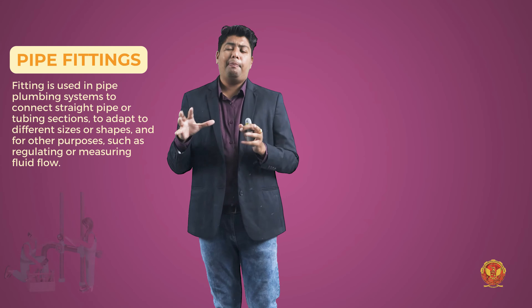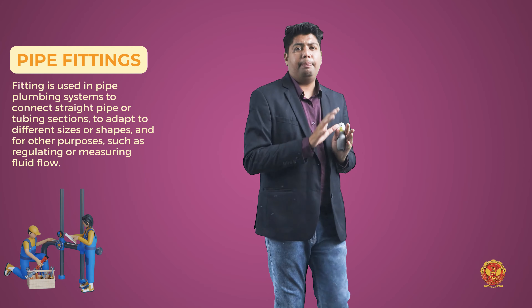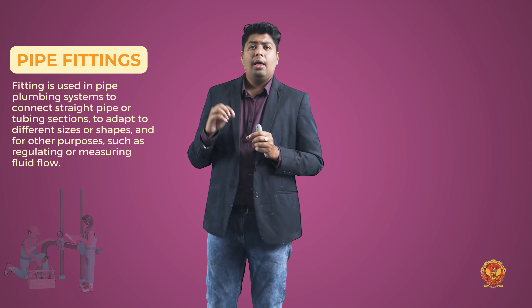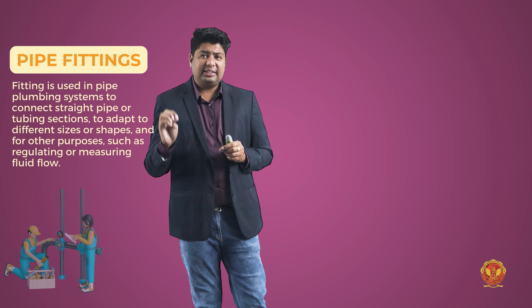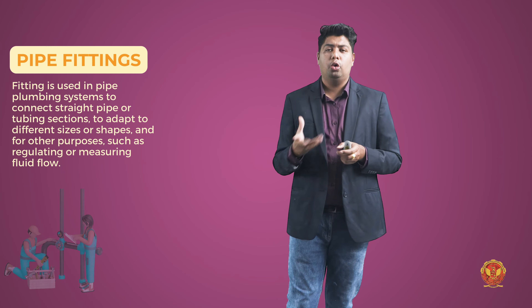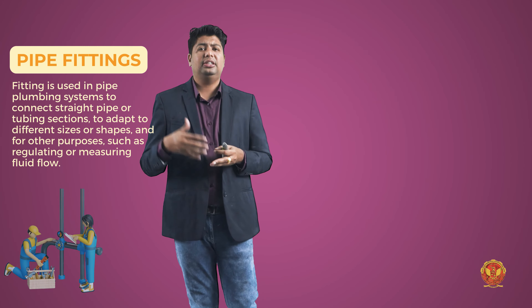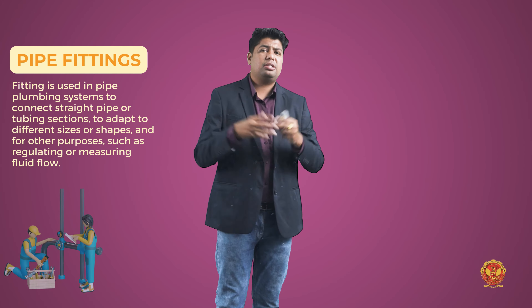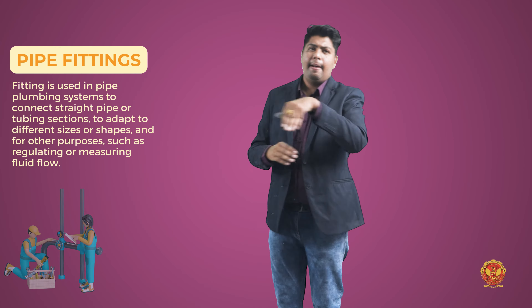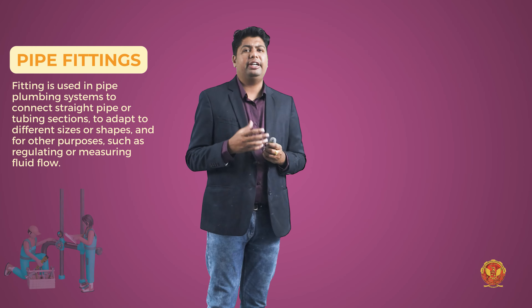A fitting is used in a plumbing system to connect straight pipe or tubing sections, to adapt to different sizes and shapes, and for other purposes such as regulating and measuring fluid flow. We use fittings when we need to change direction, change the network's position, or change sizes — for example, to convert big-size pipes into smaller pipes using bends or elbows. For all these purposes, we use fitting elements.